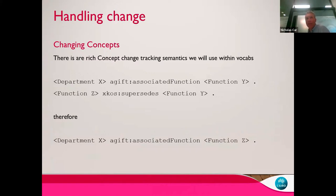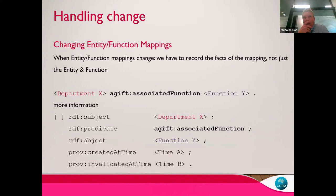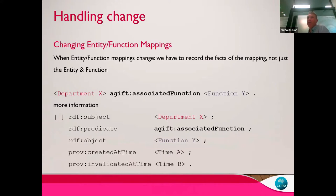We need to know whether Y and Z are equivalent so that back in time we can say the department was associated with function Z, or whether it only applies going forwards. In general we can handle changing concepts within vocabularies. As David mentioned, having a split between the organizations and the functions allows you to handle changing environments. Now there's a really tricky one: managing change between entity-function mappings. We've got an entity — say department X — that hasn't changed, and the functions haven't changed, but the mapping has. Department X has acquired a new function. Simply saying department X is associated with function Y is not enough information.